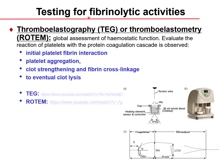Thromboelastography (TEG) or thromboelastometry (ROTEM) globally assesses hemostatic function, evaluating platelet interaction with the coagulation cascade proteins plus fibrinolytic processes. It measures the initial platelet-fibrin interaction, platelet aggregation, clot strengthening, fibrin cross-link formation, and eventually clot lysis.